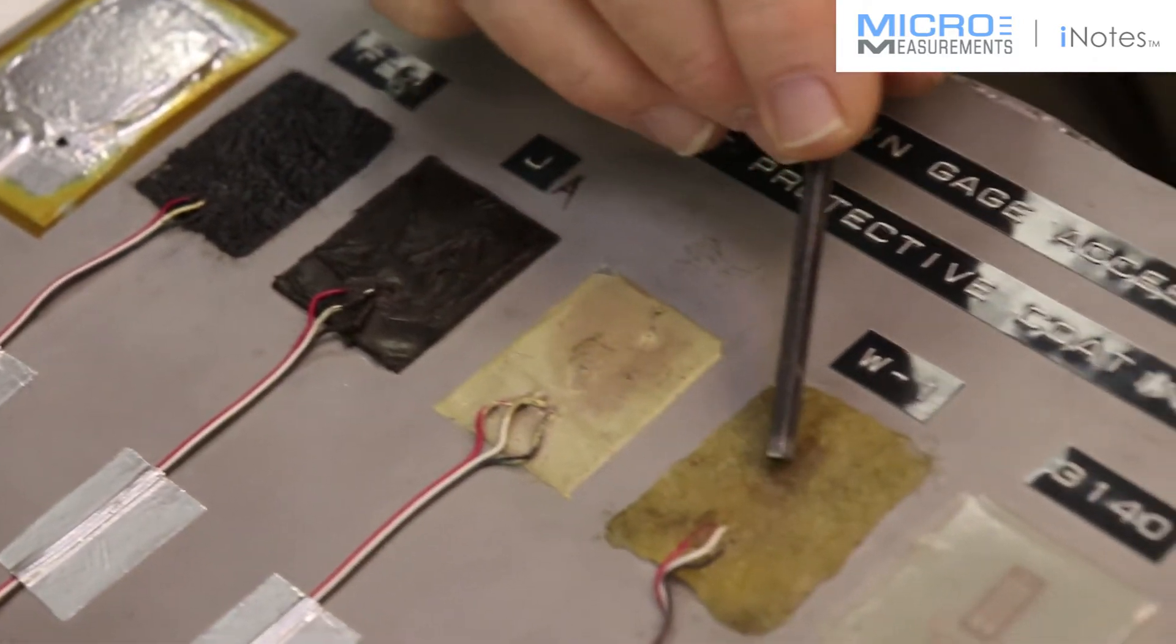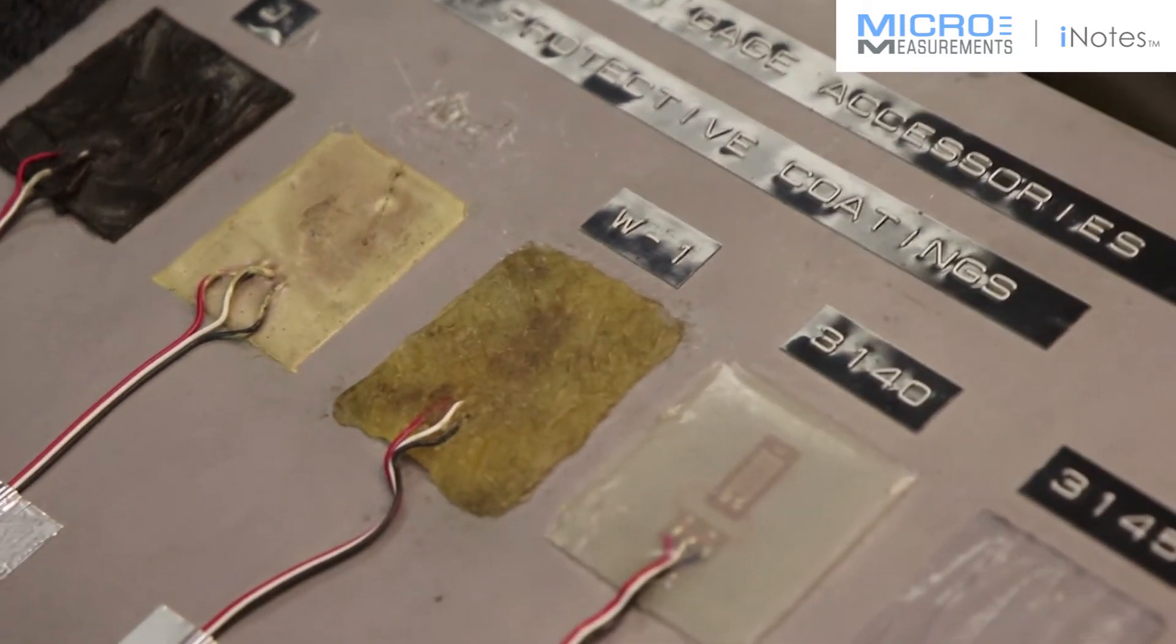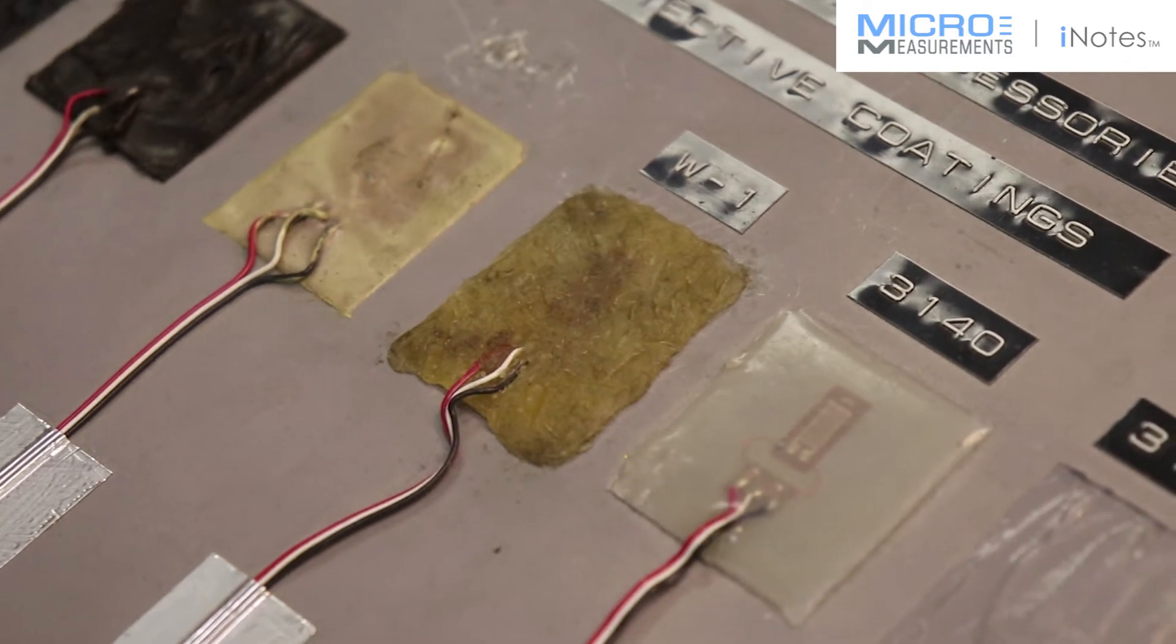The next one is W1 wax. W1 wax is our very best vapor barrier. It's a microcrystalline wax and we use it as a reference when we're checking out new environmental protections.